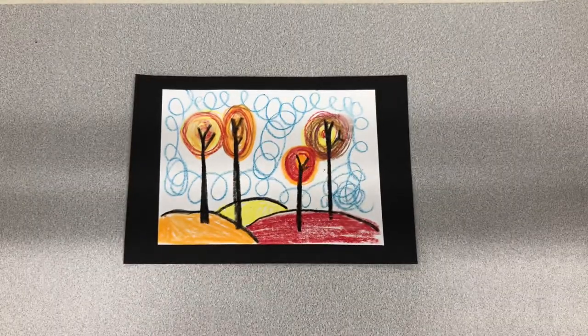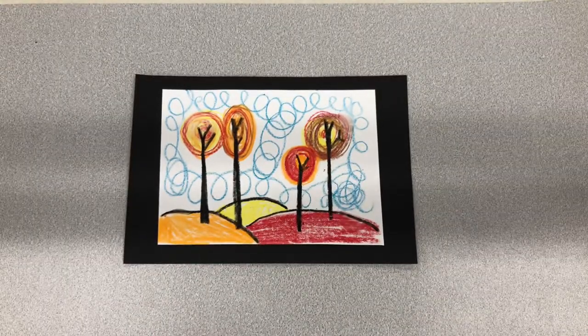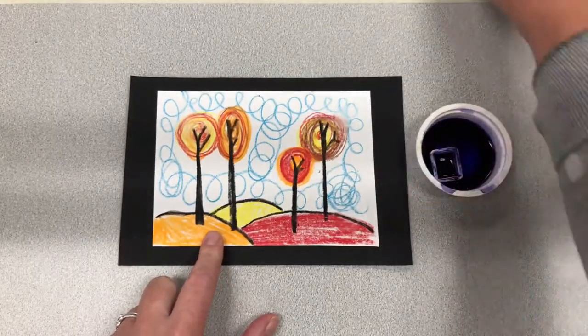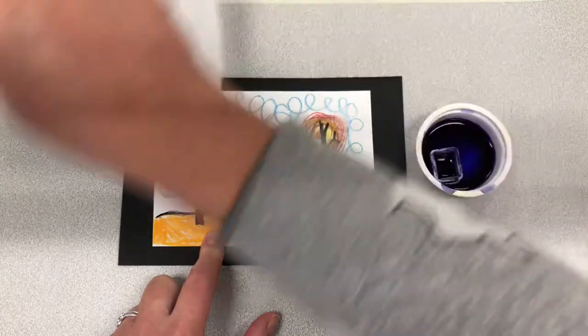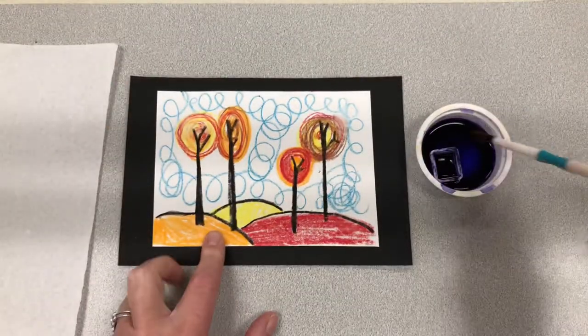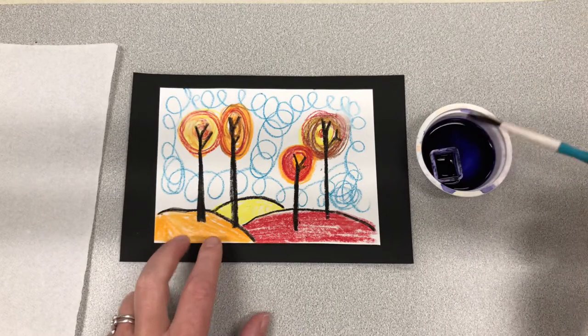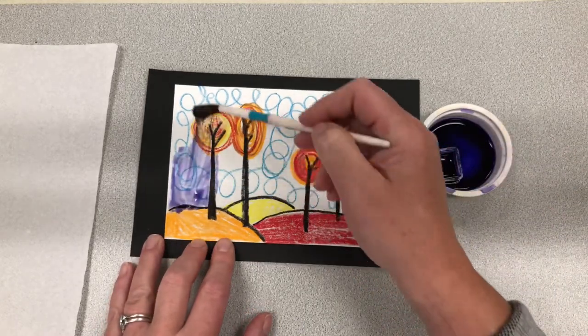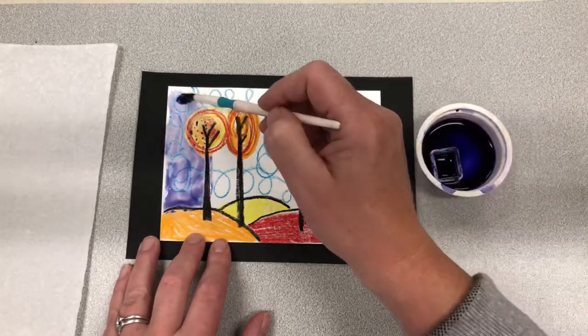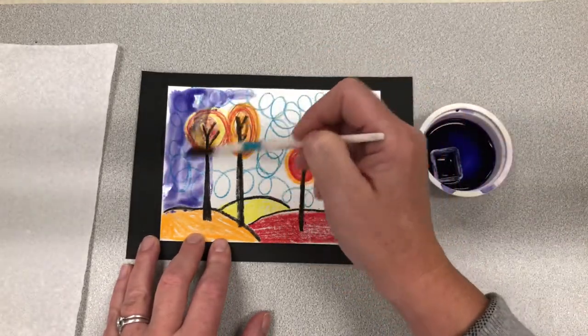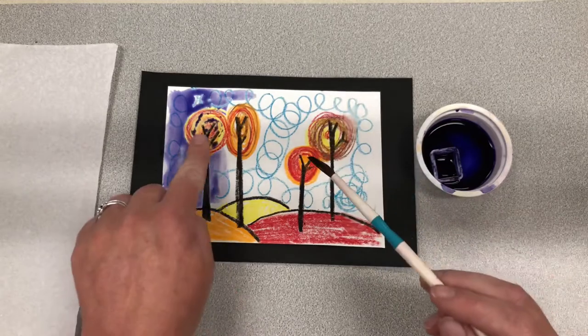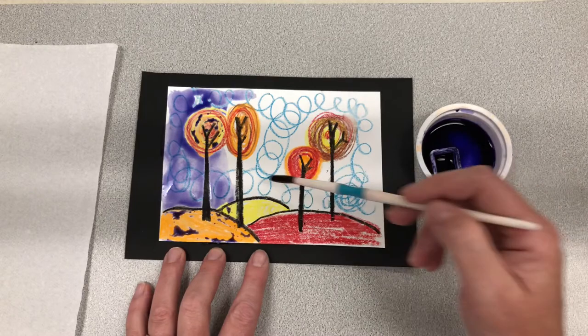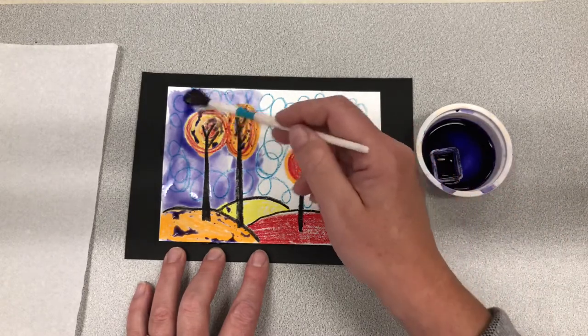Great! Now it's time for paint. Because crayons are made out of wax and watercolor paints are essentially water, we know that water and wax don't mix. So I'm going to paint over my entire picture with the paint water, and you can see how the crayon does not let the paint through on the paper.